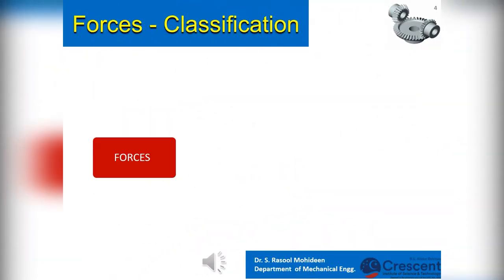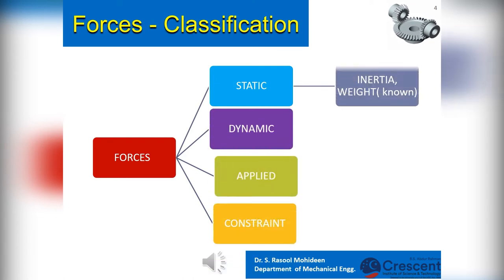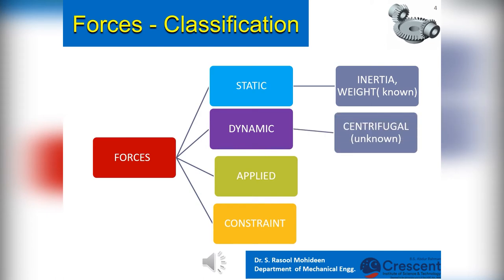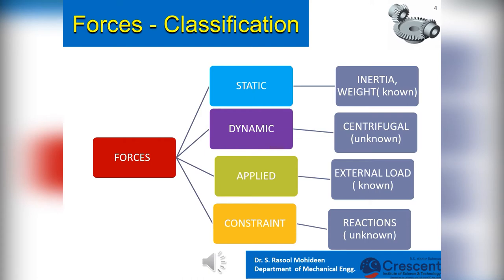Dynamics of Machinery, as mentioned earlier, deals with forces. Forces in machines can be popularly classified as static, dynamic, applied, and constraint forces. Static forces are forces existing even when the component is stationary — for example, inertia forces and the weight of the body. Dynamic forces are forces that come into play when the component is in motion; centrifugal forces are such a type. Applied forces are those applied externally, such as loads. Constraint forces are reaction forces developed due to restrictions imparted on the body. There are other ways of classifying forces, such as known and unknown forces, and contact and non-contact type forces.